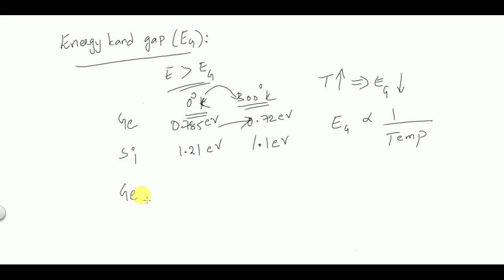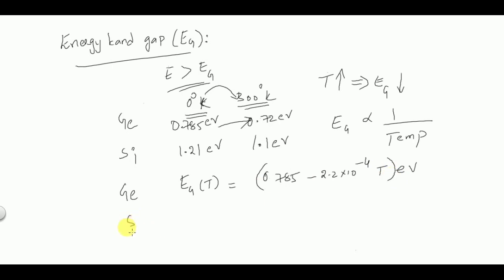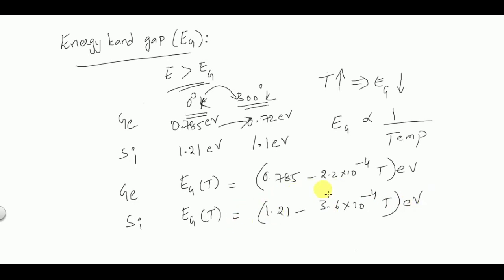For germanium, Eg at any temperature T is given by: Eg(T) = 0.785 − 2.2×10⁻⁴·T electron volts. For silicon, Eg(T) = 1.21 − 3.6×10⁻⁴·T electron volts. When T = 0 these give 0.785 and 1.21 eV respectively, and at T = 300 K you get 0.72 and 1.1 eV.